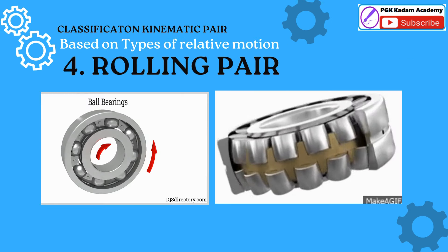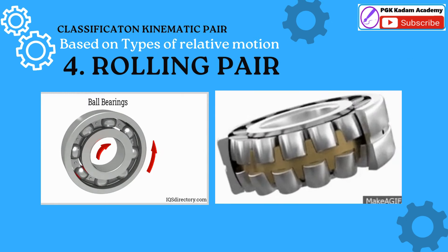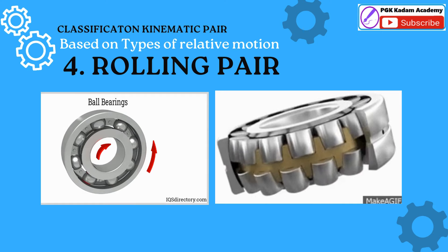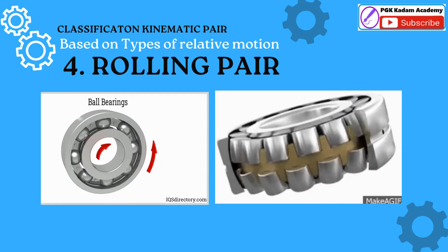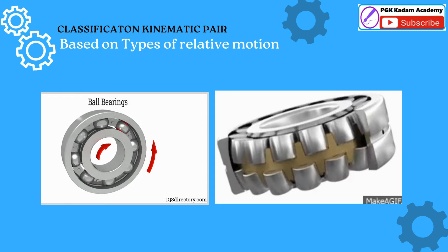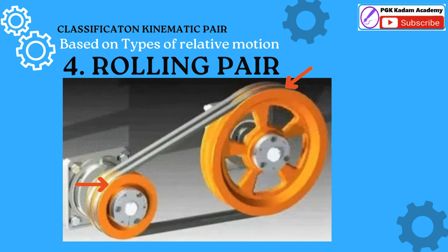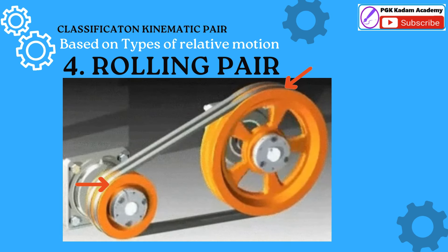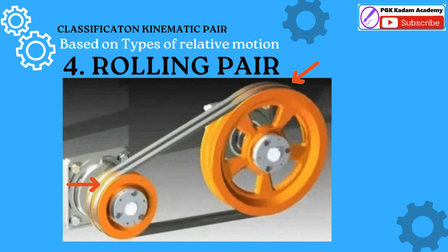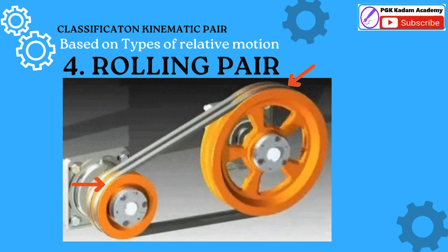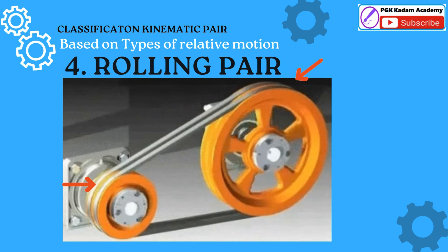Rolling Pair: When one element is free to roll over the other, it forms a rolling pair. Examples include a ball bearing rolling, as shown in the figure, motion of a wheel on a flat surface, and in a belt drive, the connection between the belt surface and pulley surface forms a rolling pair.